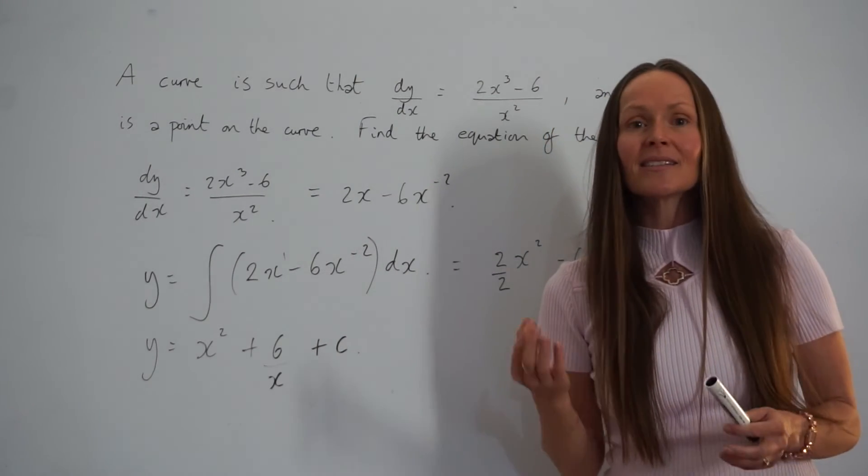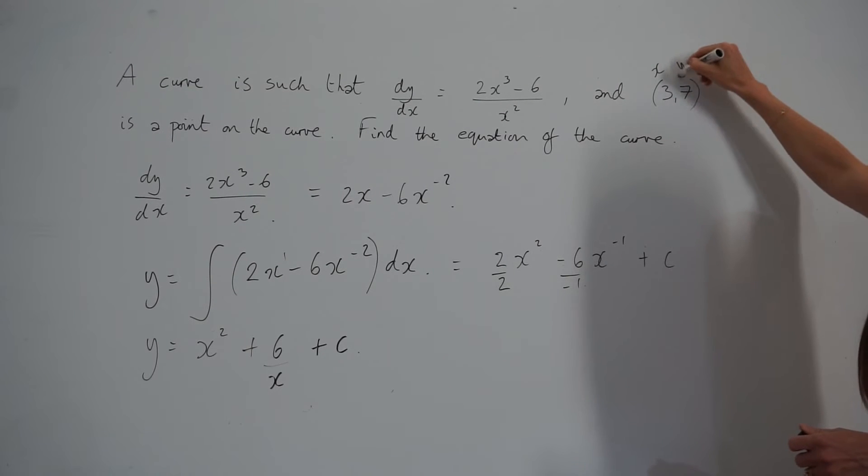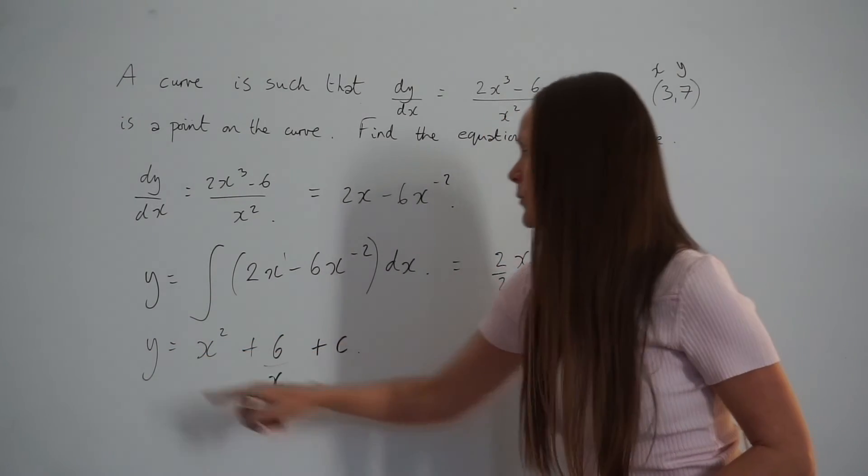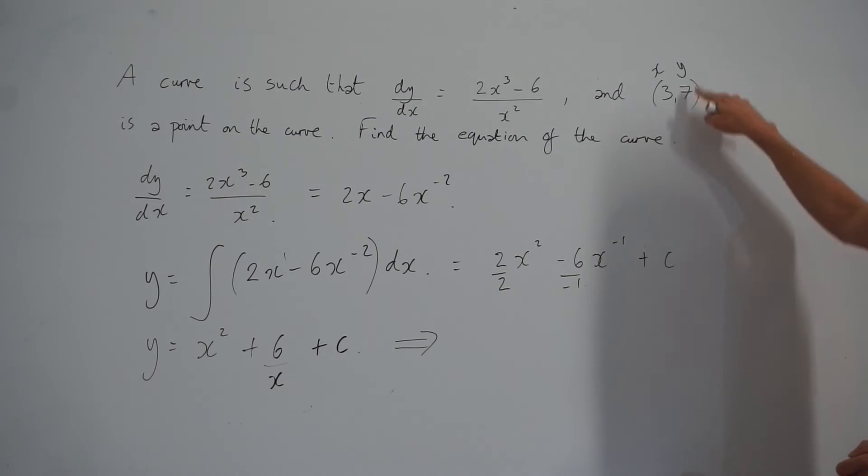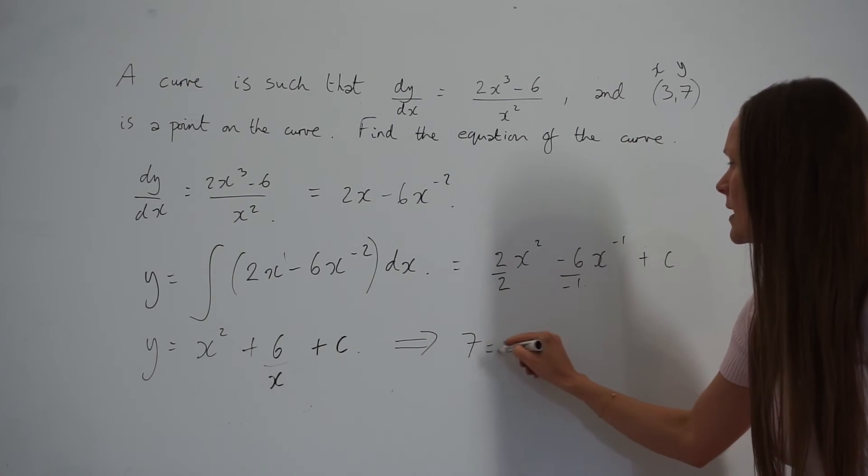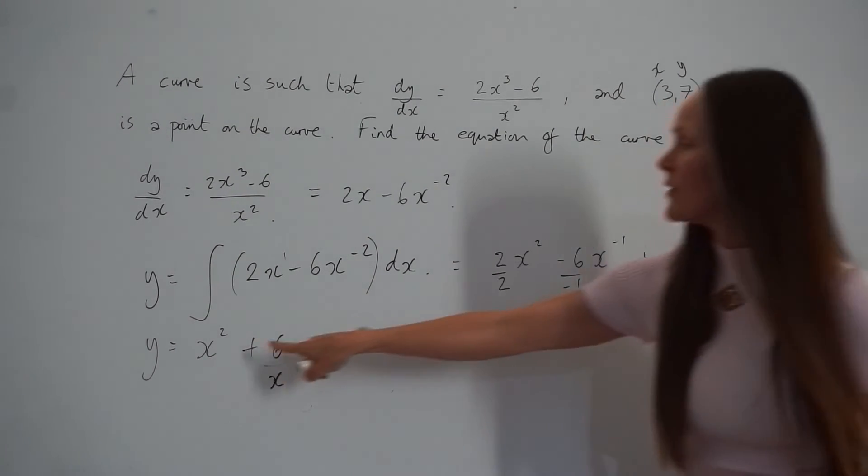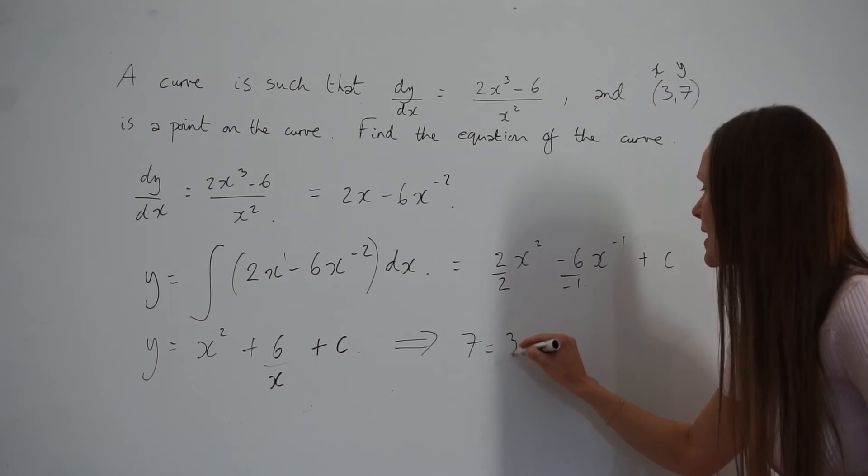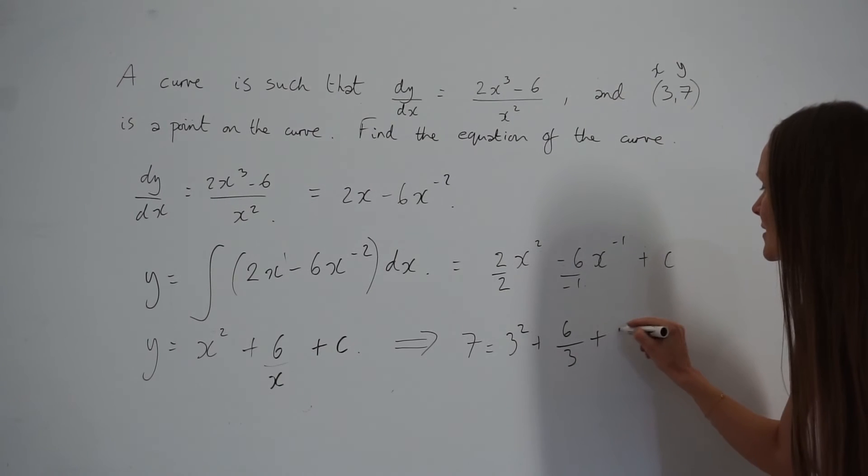What you have to do next is substitute in the coordinates given in the question. The x value needs to be replaced with 3 and the y value with 7. So instead of y equals, we've got 7 equals. These two x values are replaced with 3, so instead of x² we have 3², and then we have 6 over 3 plus c.